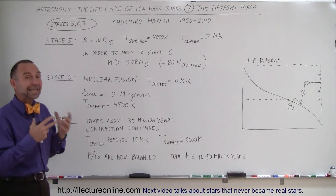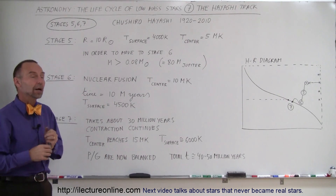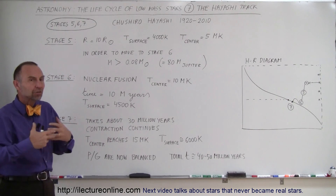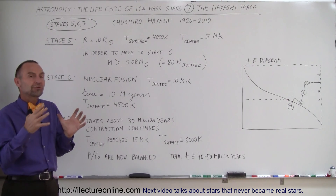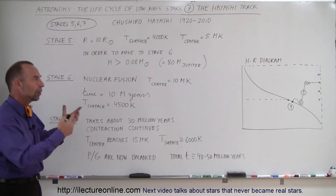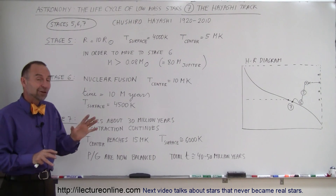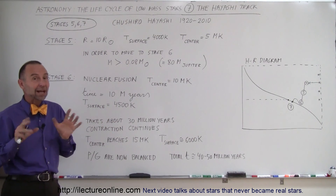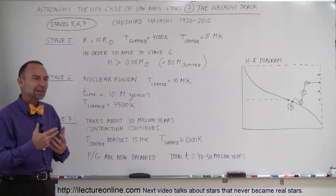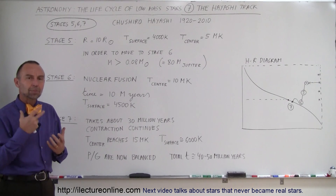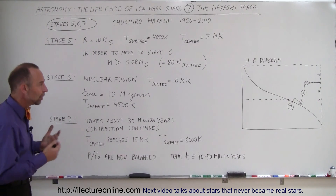In our solar system, that didn't happen — just a single star, with everything else too small to become a star, partly due to the fragmentation process. That's a good thing, because living in a solar system with two stars would have such a great effect on planetary orbits that they probably would not have been stable enough to sustain life.